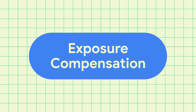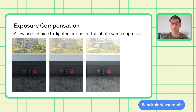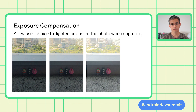1.1 also adds exposure compensation APIs. Exposure compensation allows a user to adjust the metering of the device to better capture otherwise over or underexposed areas. In this example, we have a scene with bright content outside the window and dim content on the interior. The user can adjust exposure compensation to better capture the bright outdoors or the dim interior.